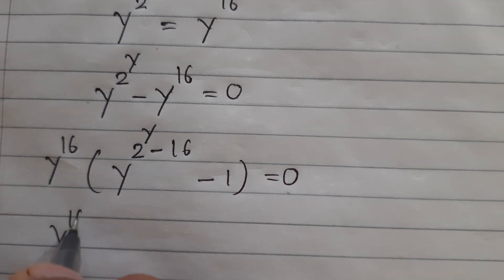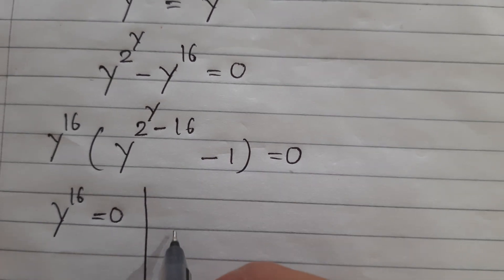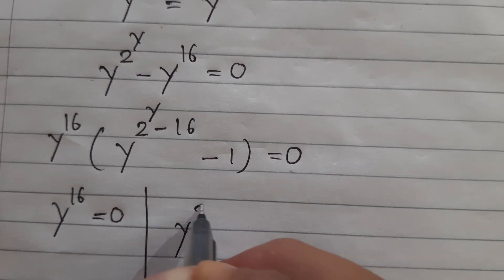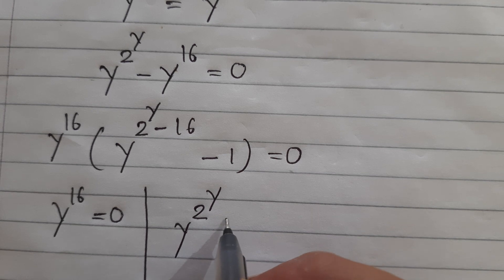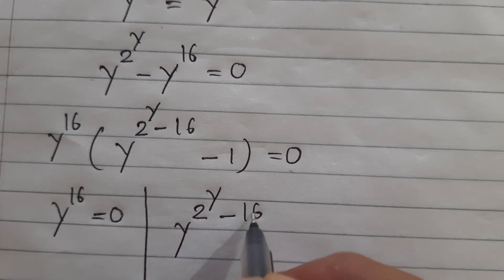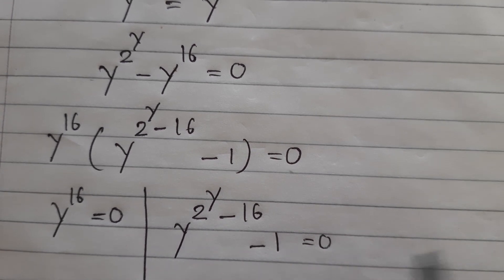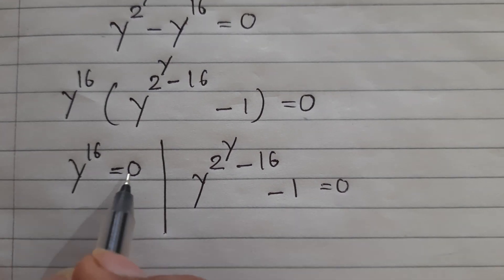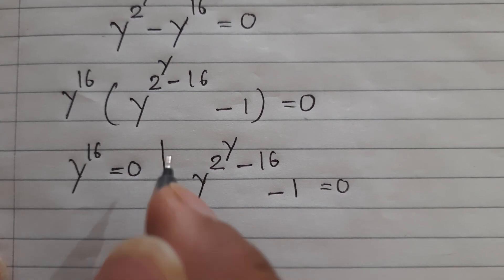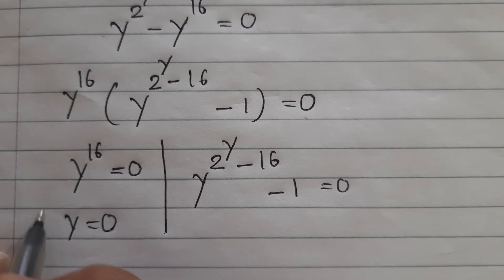So we have two cases: y to the 16 equals 0 and y to the power of (2 to the power y minus 16) minus 1 equals 0. From y to the 16 equals 0, we get y equals 0. This is another solution.